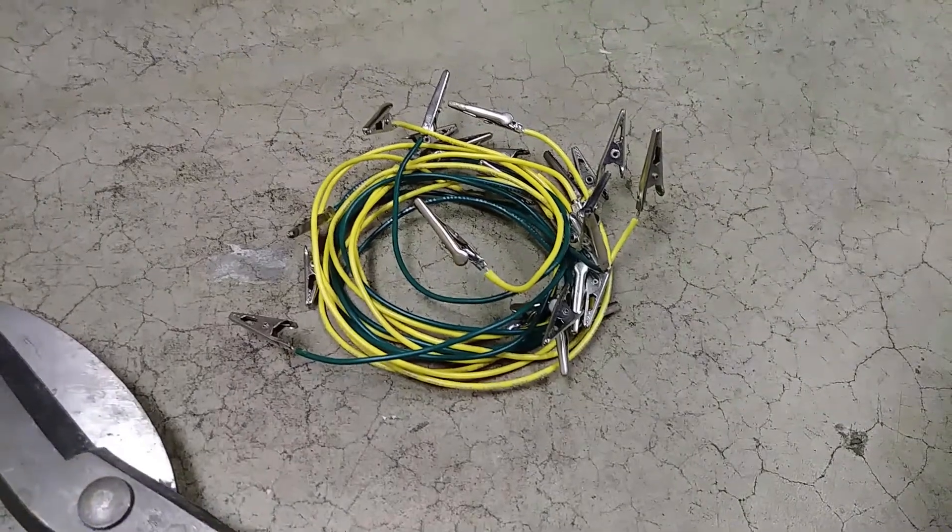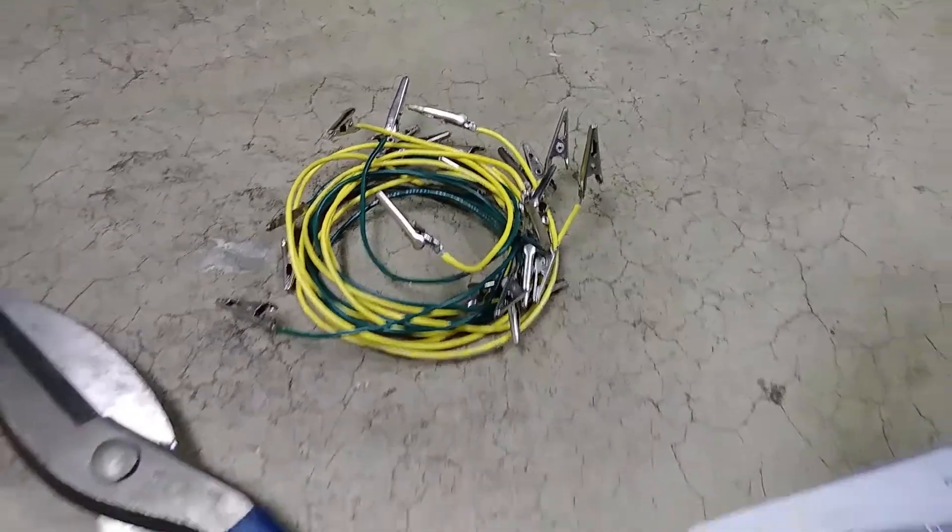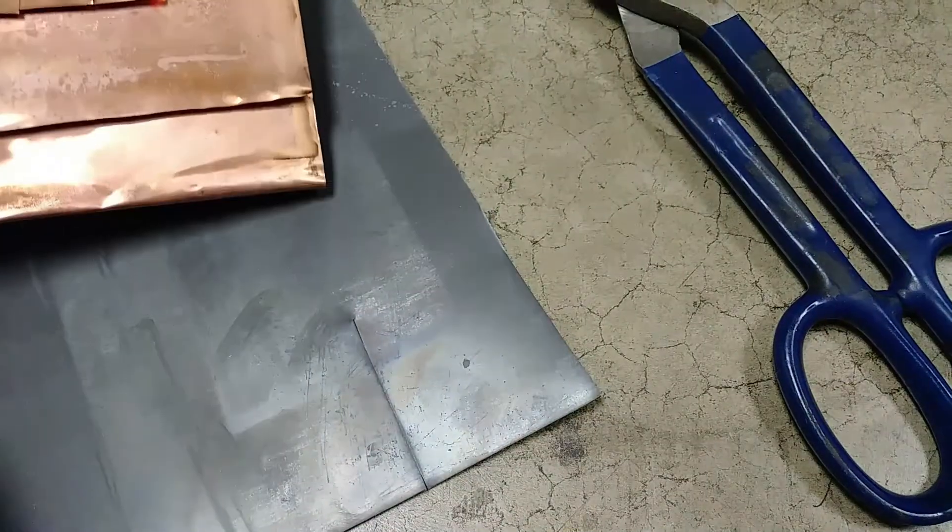Wire with alligator clips - alligator clips are nice but not absolutely necessary. Those are tin snips for cutting the metal, zinc and copper.